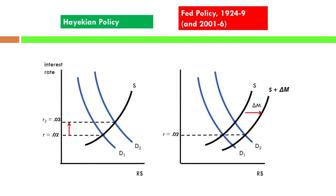And it has to make you worry about right now, when we've had zero interest rate policy for five years. The Hayekian policy prescription is: you should let the interest rate rise when the demand for loanable funds increases. The Fed policy in the 1920s was to shift out the supply of loanable funds by increasing the money supply and keep the interest rate from rising — which creates the problem.